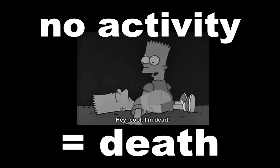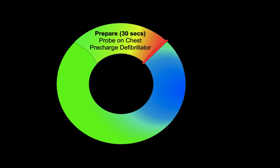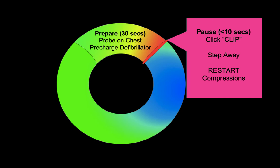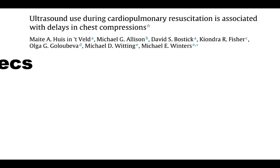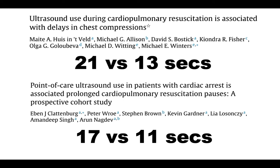So how do we actually do this? First, prepare: get the probe on the chest, and make sure the defibrillator is charged. During the pulse check, click clip on the machine — which is automated for 6 seconds — then step away and encourage your team to restart compressions. It is really important that you do not try to interpret the ultrasound during the pulse check. As CPR is ongoing, then interpret the ultrasound, looking for reversible causes or what interventions may need to be performed. If you identify a fine VF, go ahead and intervene prior to the next pulse check. Studies have shown that use of ultrasound in cardiac arrest leads to delays in chest compressions, so again — click clip, step away, and do the interpretation while the next round of CPR is ongoing.